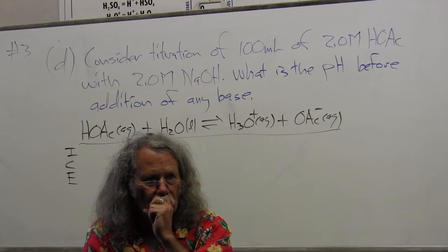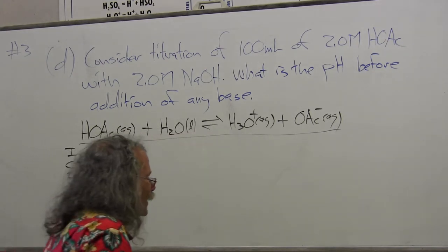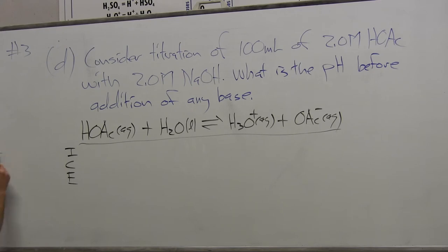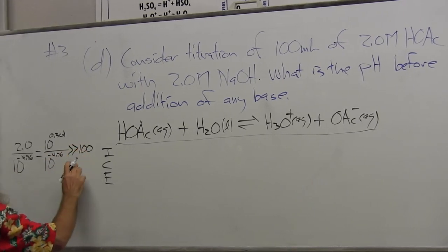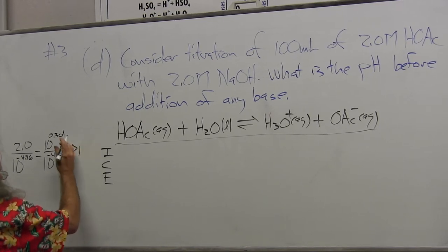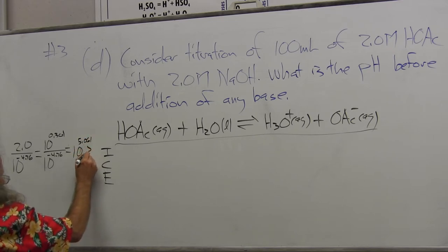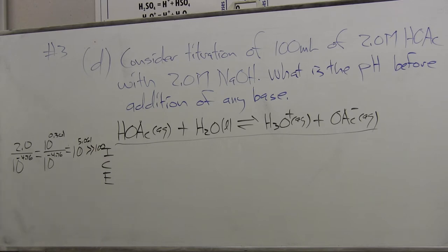Do you want us to show the approximation on our paper? Well, you should probably show it on the paper. So I've got the molarity, which is 2.0, divided by K, which is 10 to the minus 4.76. And that's equal to 10 to the 0.301 divided by 10 to the minus 4.76, and that is much greater than 100. We can solve it. 5.061 equals 10 to the 5.061, which is much greater than 100. That's actually greater than 100,000.